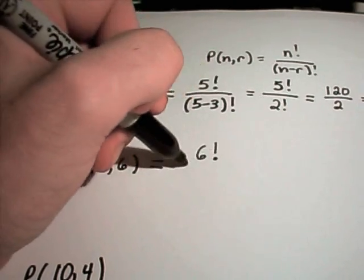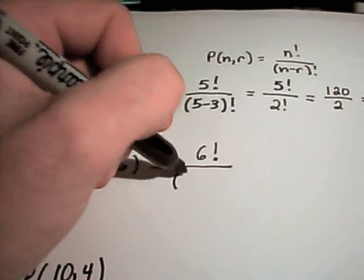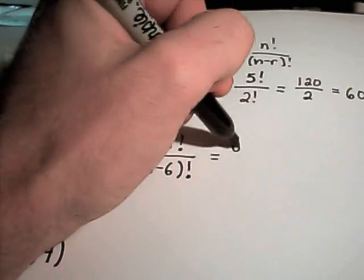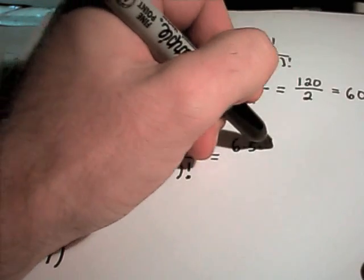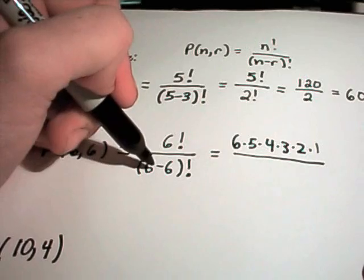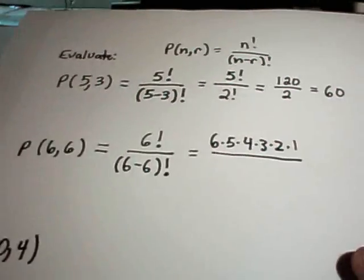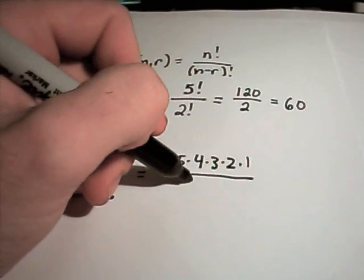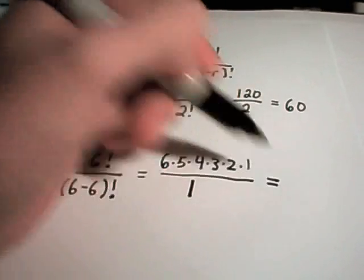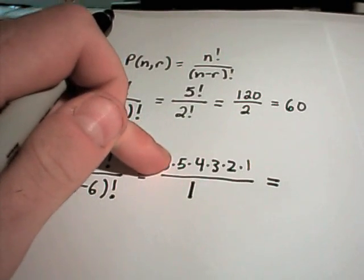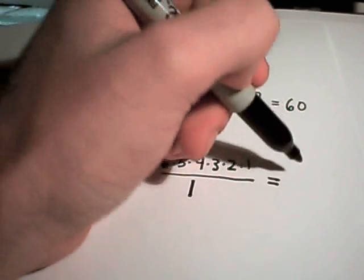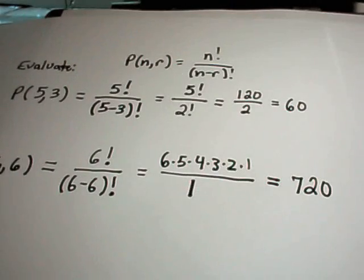On top you have 6 factorial, then on the bottom you have (6 minus 6) factorial. Well again, 6 factorial is 6 times 5 times 4 times 3 times 2 times 1. On the bottom we have 6 minus 6 which is 0 factorial, but remember 0 factorial is actually defined to be 1. We just said that 5 factorial was 120, that's what we had on the top part of our other fraction, so if you multiply that by 6, you'll get 720.